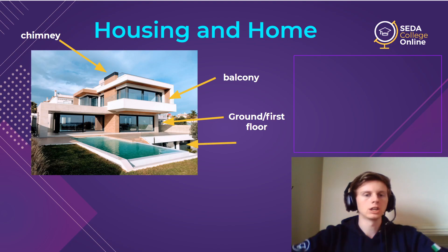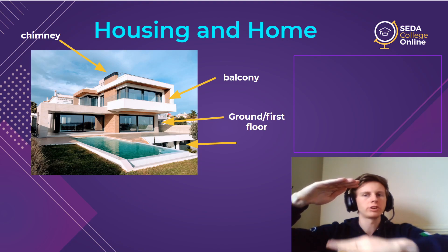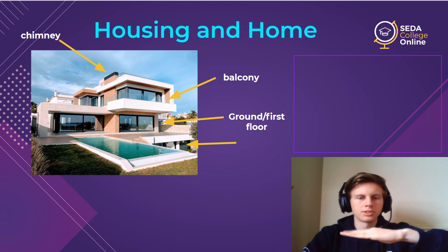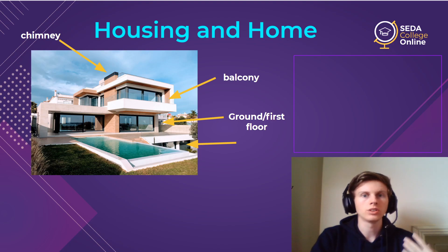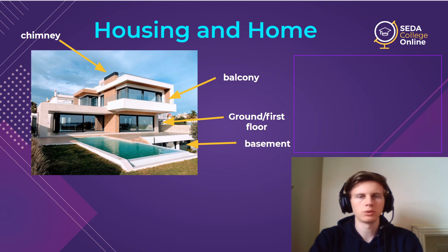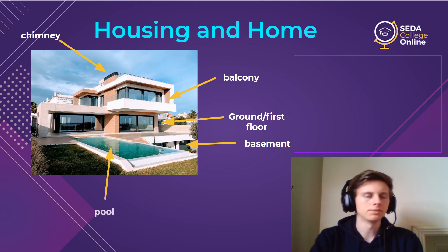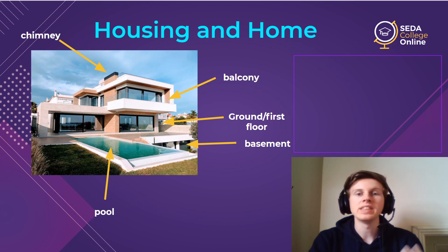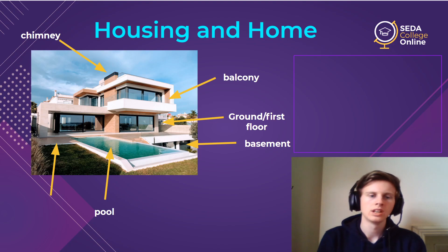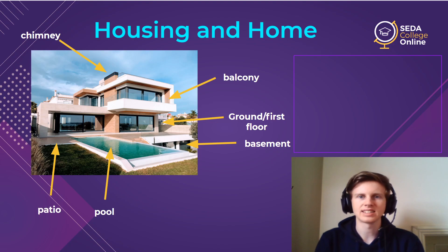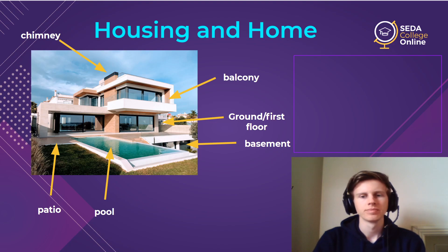Now let's go below the ground. We're underground, and that is called the basement — the basement floor. That's the same for both UK and US English. Next, we have a nice pool — the area where you can swim. And then next to the pool, this is where you might have a cookout — you might have a grill, make hot dogs, hamburgers, kebabs, skewers, all kinds of stuff. You do that on the patio. That's the kind of outdoor area to sit, talk, drink, and eat.